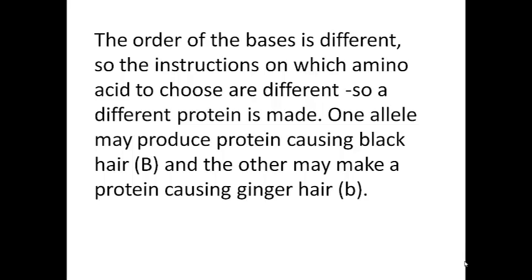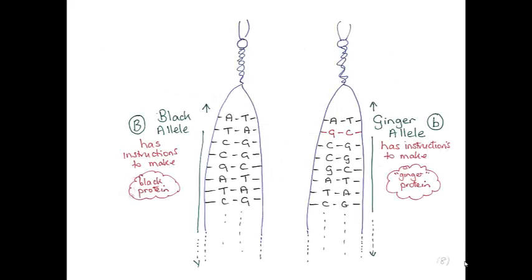One allele may produce a protein causing black hair colour — I've given that the letter B. The other allele may give the instructions for the cell to make a protein causing ginger hair, and I've given that the little b. So now I've added that to my diagram. On the right-hand side there is the ginger allele, little b, which contains the instructions for the cell to make a protein that causes ginger hair. With a slightly different base order, the black allele, big B, gives the cell instructions to make a protein that causes black hair colour.